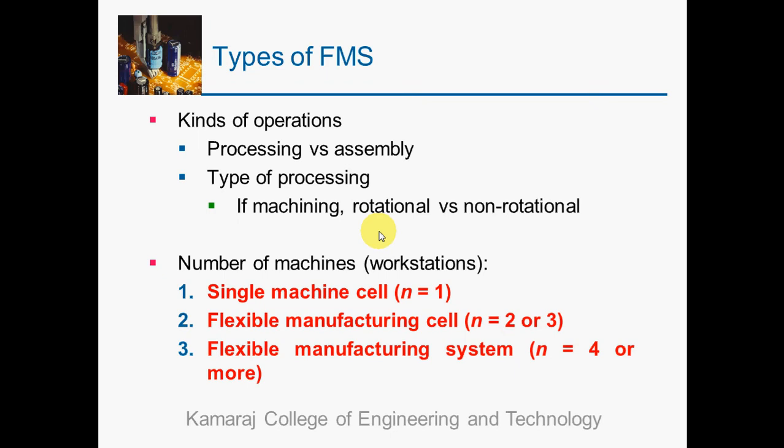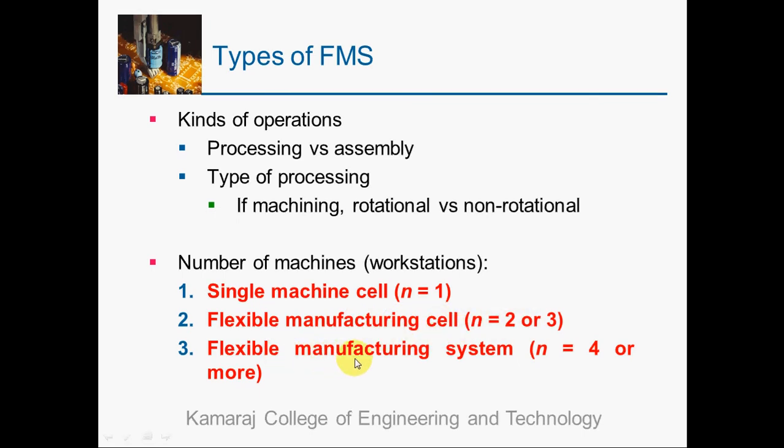The different types of FMS are classified based on various factors. The first factor is the kind of operation — whether it is processing, assembly, or a specific type of machining such as rotational or non-rotational. The second and most important classification is based on the number of machines: (1) Single Machine Cell, (2) Flexible Manufacturing Cell (FMC), and (3) Flexible Manufacturing System (FMS).